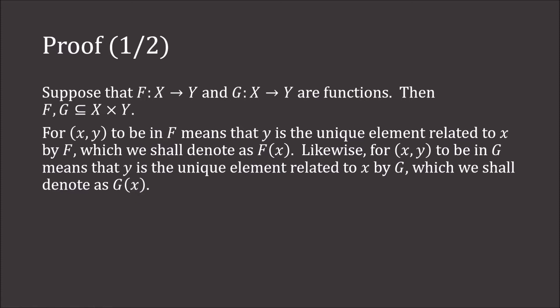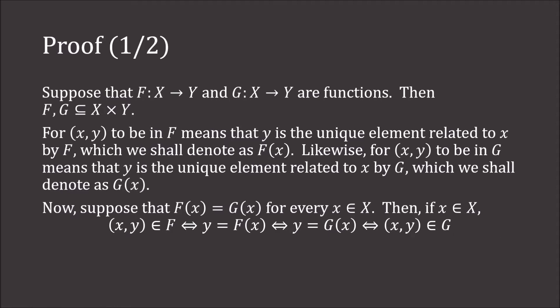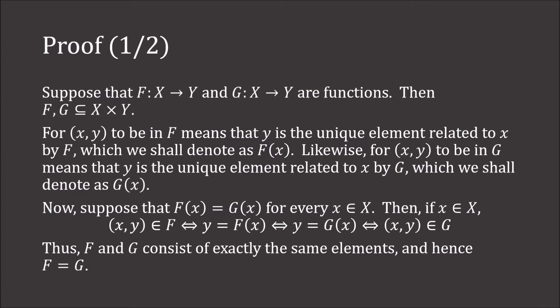Suppose f(x) equals g(x) for every x in X. Then (x, y) is in F if and only if y equals f(x), which holds if and only if y equals g(x) — because f(x) and g(x) are the same — which holds if and only if (x, y) is in G. So F and G consist of exactly the same elements, and hence F equals G.